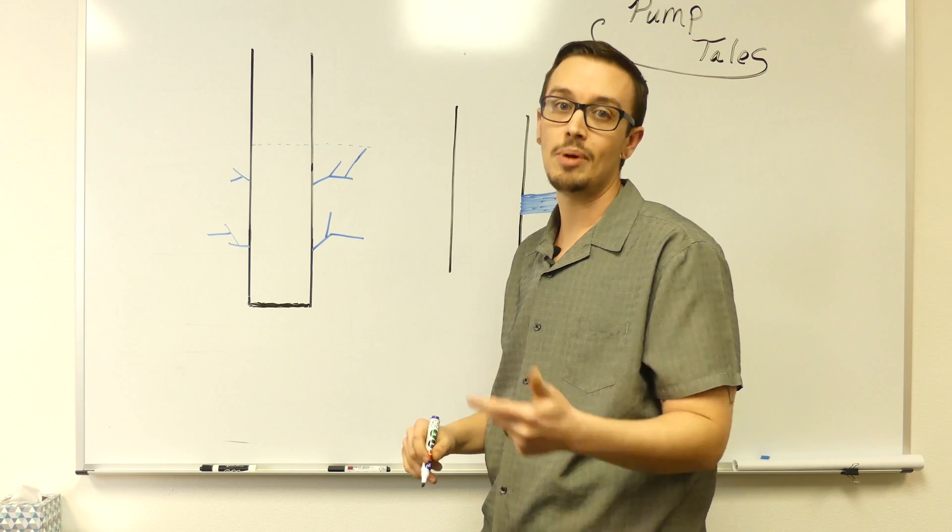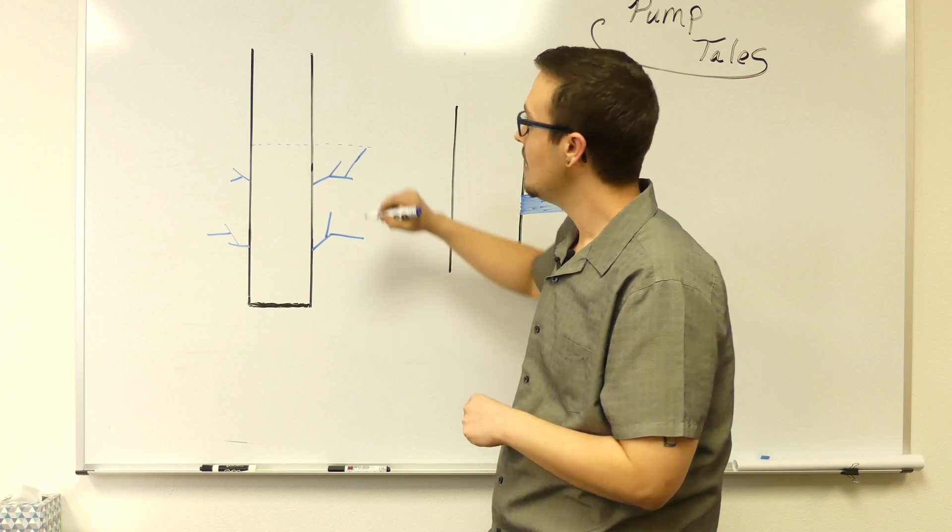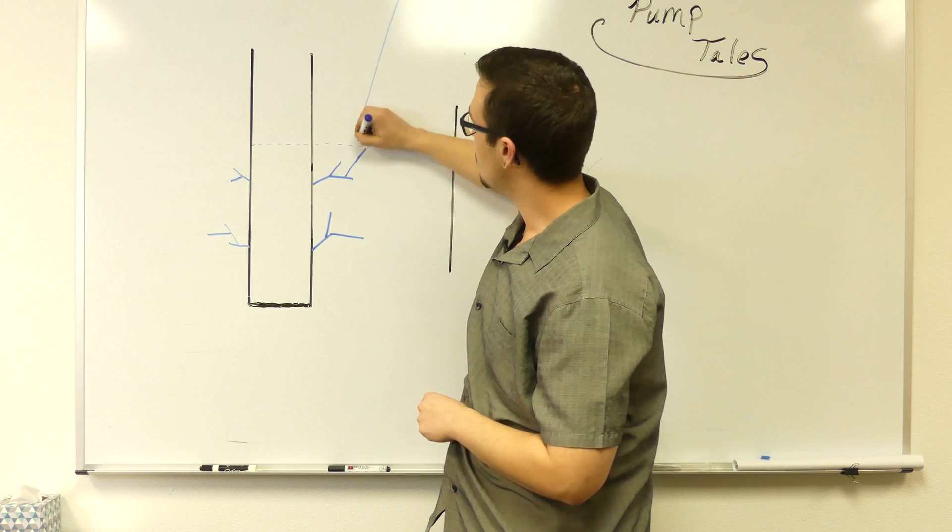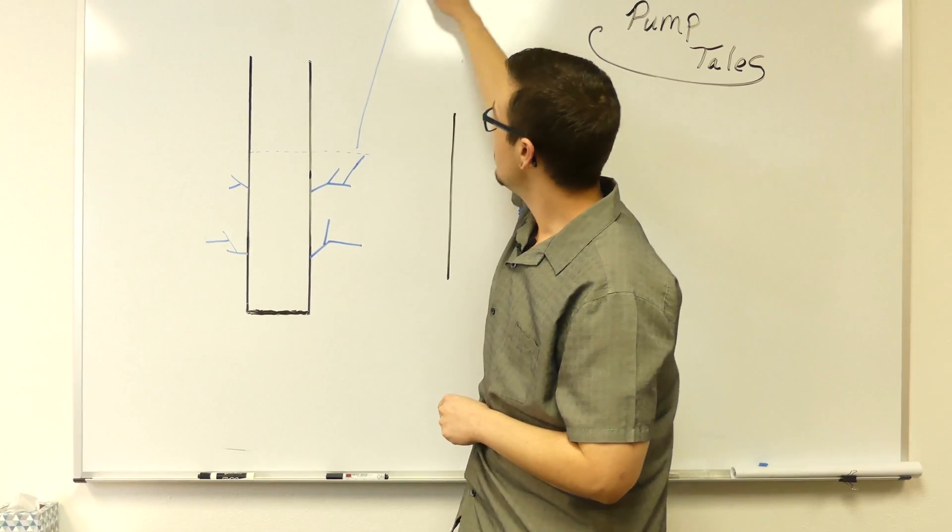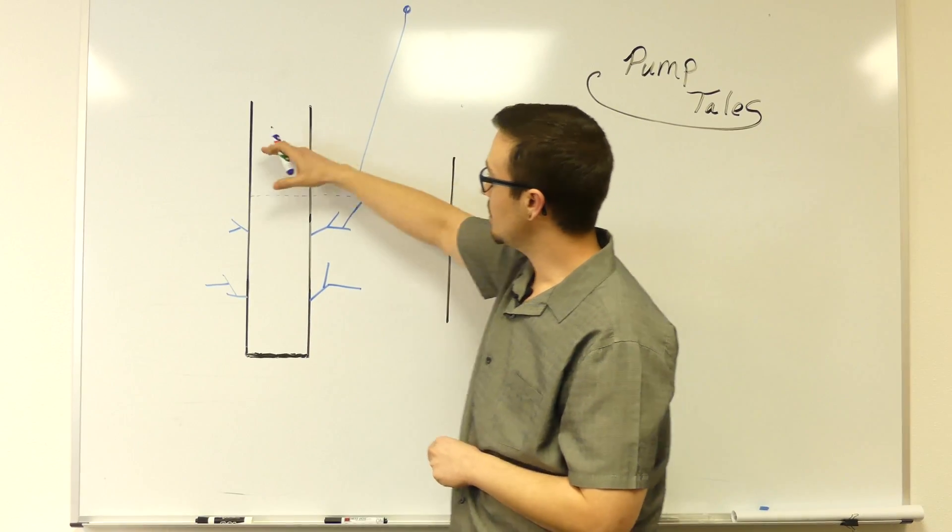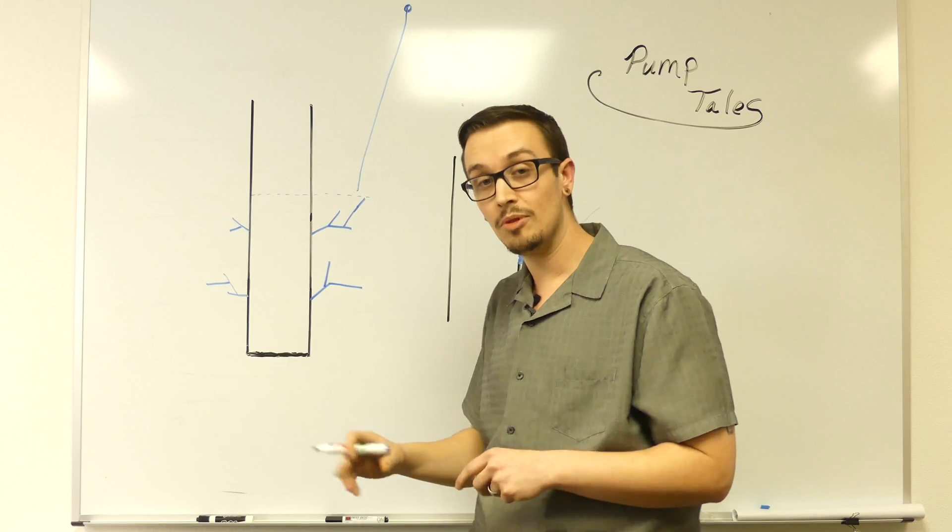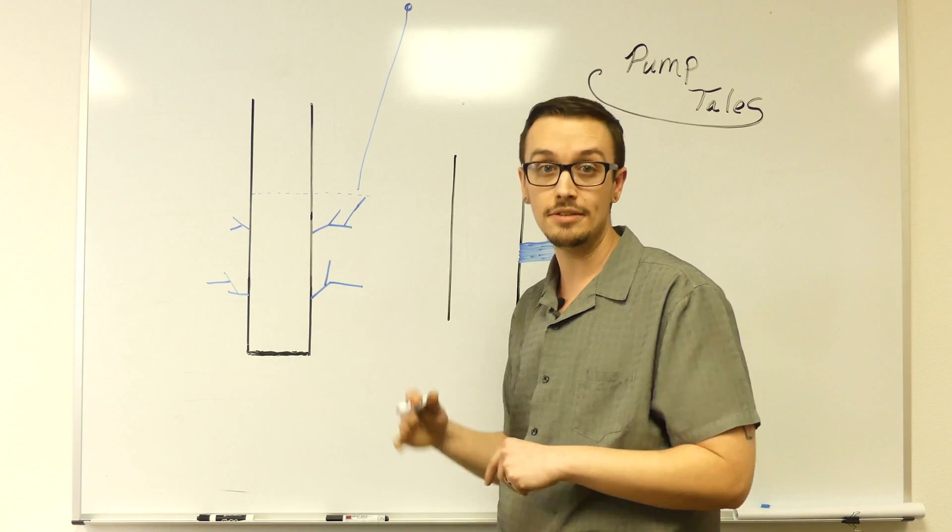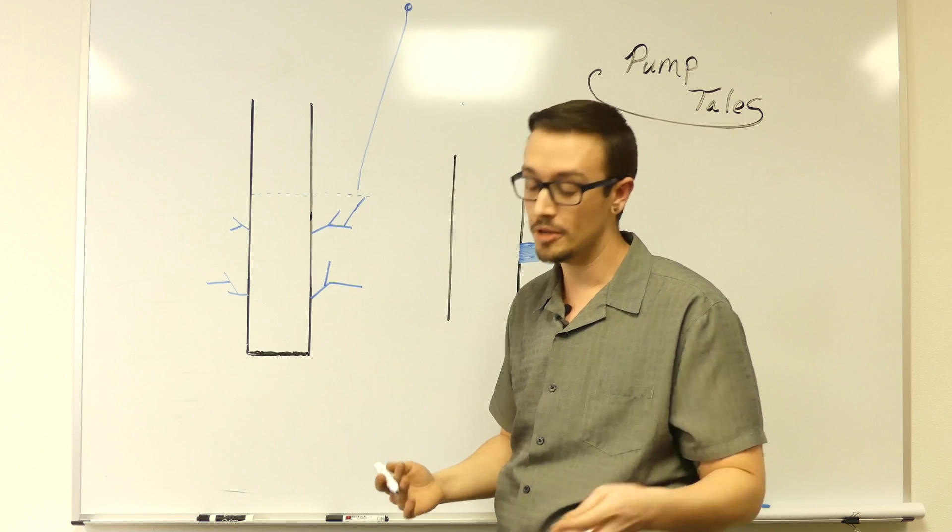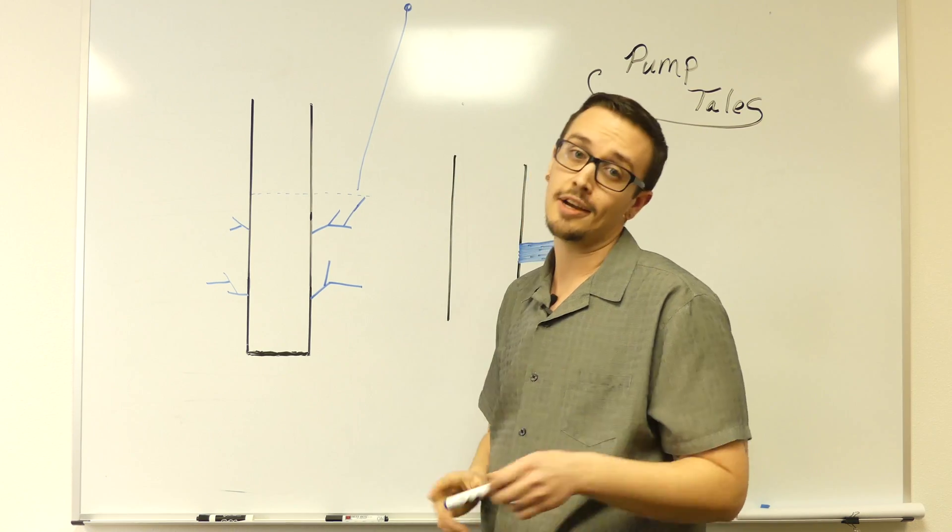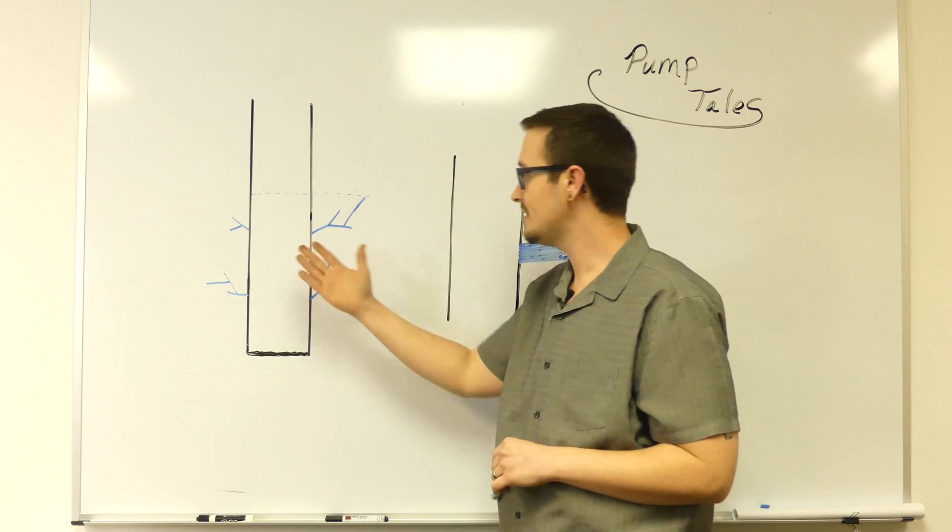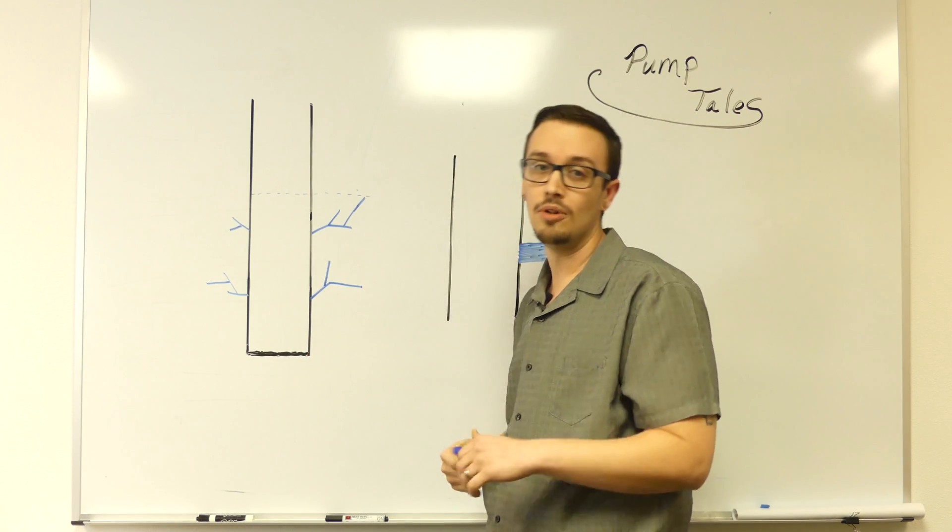Now you maybe have heard of artesian wells and things like that in the past or somewhere along the line. And in that situation you may have a mountain or something that's supplying the well, which then the static water level is going to be overflowing the top of the well because the source is higher than the well itself. And that's where artesian wells come into play. But anyways, we're talking about low producing wells.